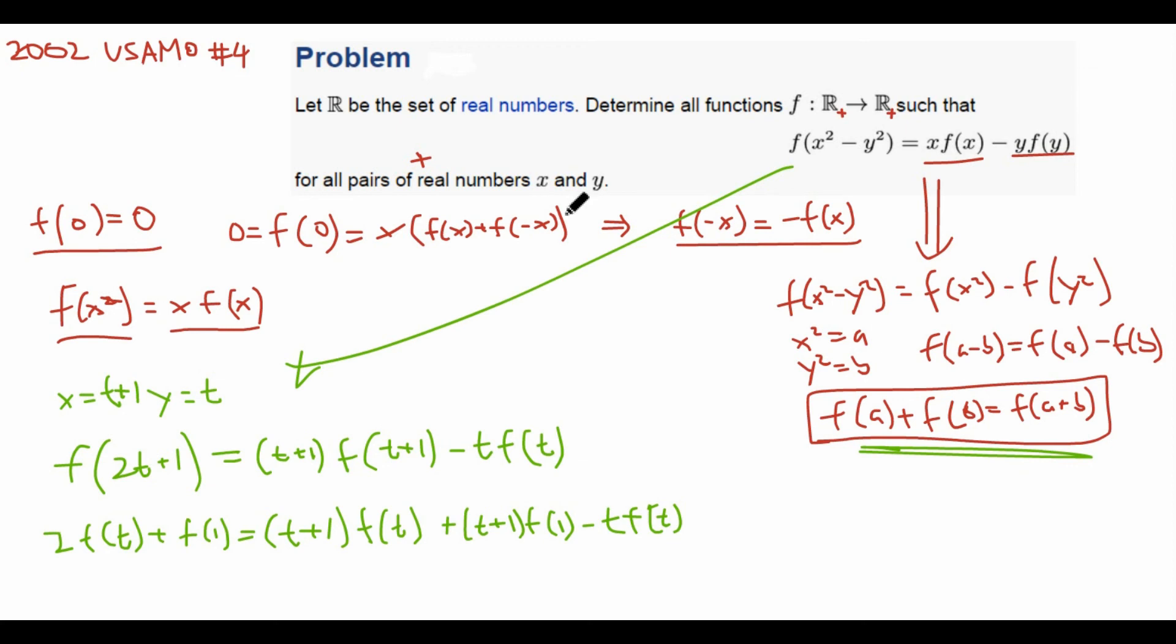we see that we have some cancellation here. There is this part, and there is this part. And so what's left here is just f(t) + tf(1) + f(1). Oh, look, more cancellation. And this equals 2f(t). Oh, look, even more cancellation. And this is just f(t). So now we know that f(t) equals t times f(1).